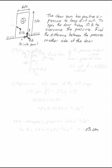The clean room has a positive air pressure to keep dirt out. To open this door takes 10 pounds of force by pulling on the door handle. The door handle is 2 inches away from the end of the door. Find the pressures from one side of the door to the other.